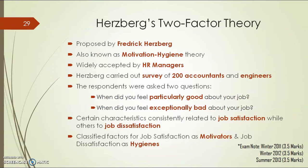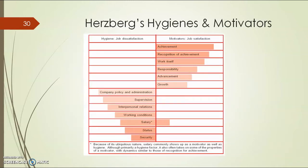Based on the responses received, Herzberg studied that certain characteristics consistently related to job satisfaction while others related to job dissatisfaction. The factors pointing towards job satisfaction and those pointing towards job dissatisfaction were identified and classified — categorized as motivators and hygiene factors. Factors giving job satisfaction were called motivators, and factors causing job dissatisfaction were called hygiene factors.